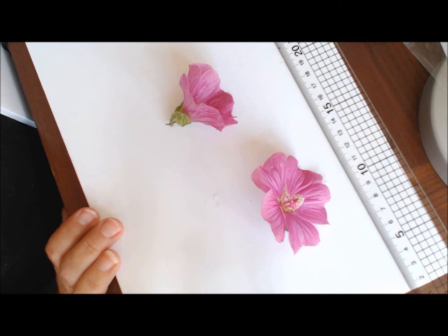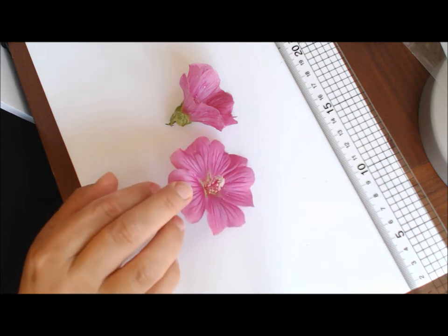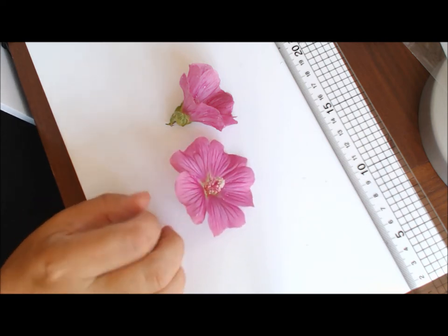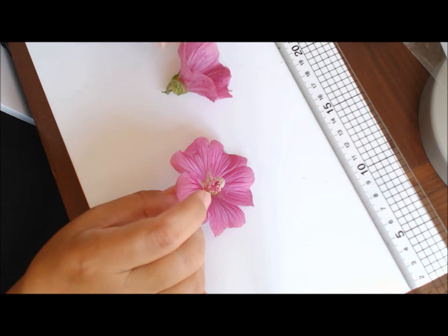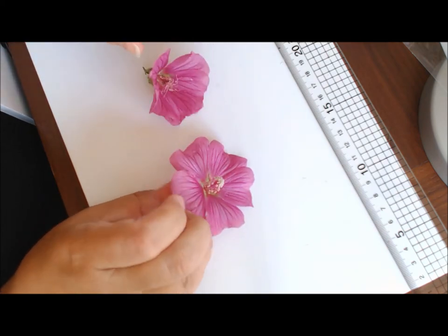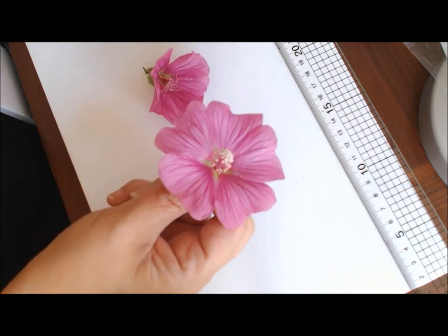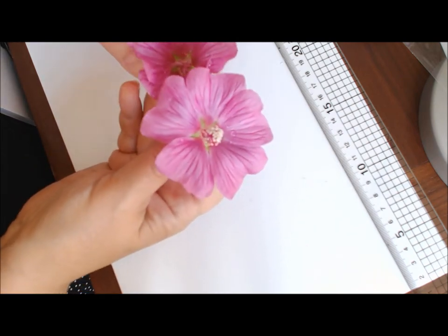I'm going to run through a dissection today for you, and I've chosen this Lavatera flower which I've just cut from the stem. They're fairly freshly opened flowers. You should always investigate the stages of your flowers before you start. You can see this one's a more recently opened flower than this one.